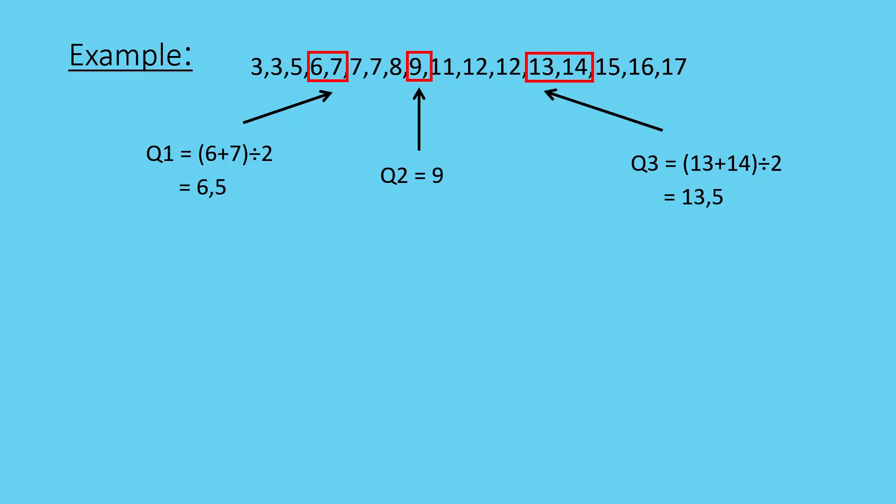If I looked at my interquartile range, I have 13.5 minus 6.5. So, I subtract my two quartiles from each other. My upper quartile from my lower quartile, and that gives me a range of 8.